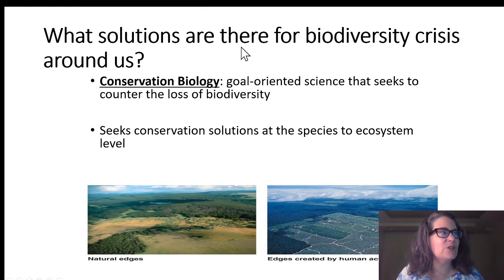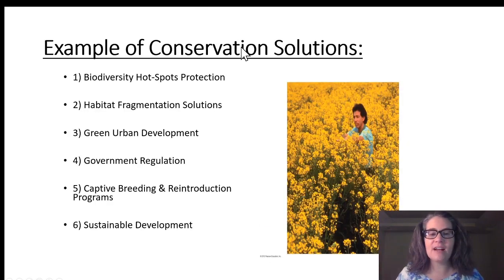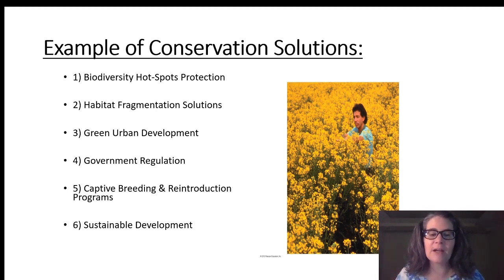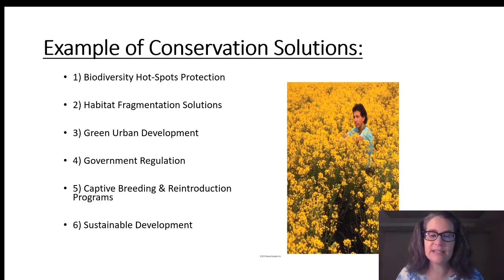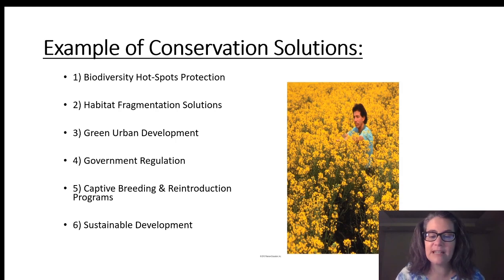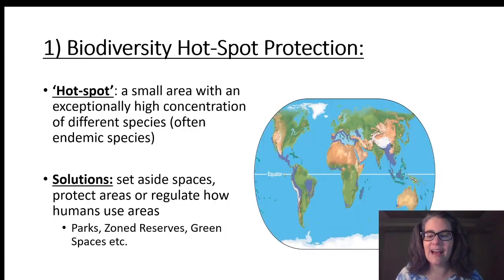I have six examples of conservation solutions I want to walk through — there are more than this, but this gives you a smattering of ideas. I want to talk about conservation programs to protect different areas, especially biodiverse areas; habitat fragmentation solutions; green urban development; government regulations; captive breeding and reintroduction programs; and lastly, sustainable development. These are some of the ways that we are trying to protect these different habitats and ecosystems from human threats.